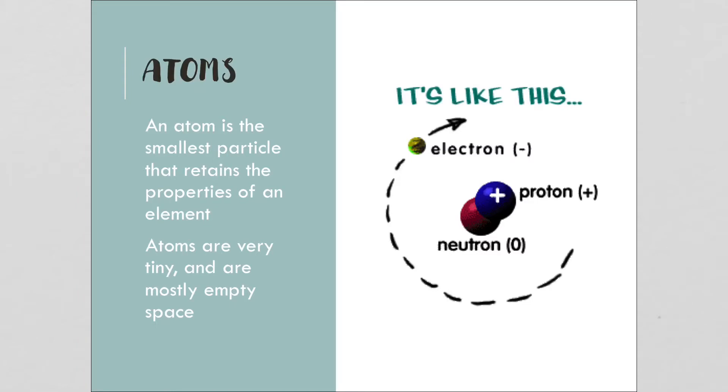An atom is the smallest particle that still retains the properties of an element. If you broke it down further, it would no longer be that element. If you broke apart the nucleus, you would create two new nuclei with very different properties. Atoms are very tiny, and they're mostly empty space.